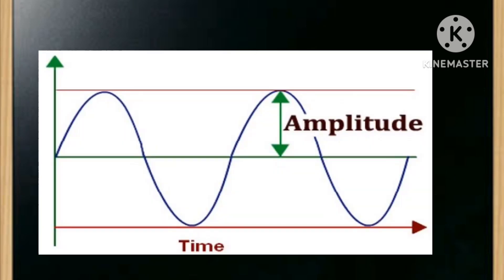Now let's understand what amplitude is. The maximum extent of vibration of a vibrating body from its mean position is known as its amplitude. You can understand amplitude from the diagram given.